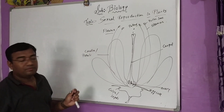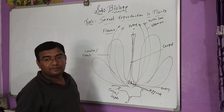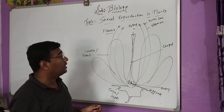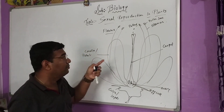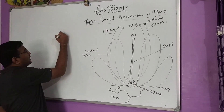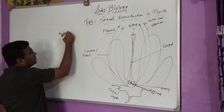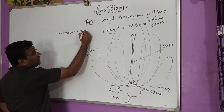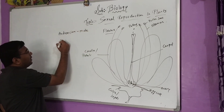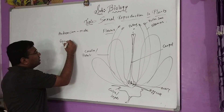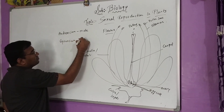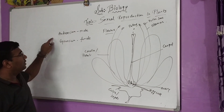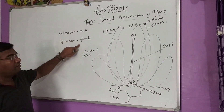So how does sexual reproduction take place in plants? Sexual reproduction takes place with two different kinds of parts: male part and female part. The male part is known as androsium, and the female part is known as gynosium. The male part fuses with the female part.